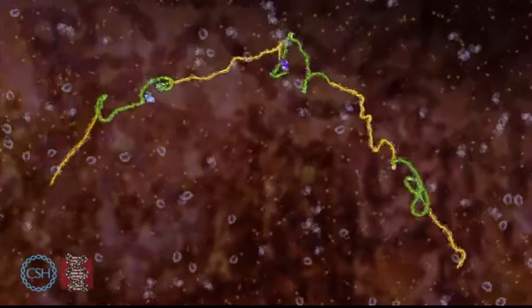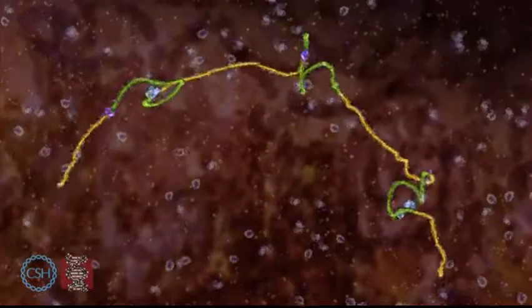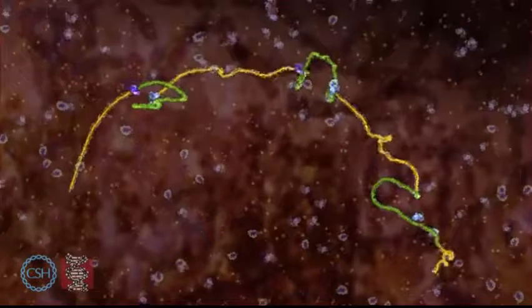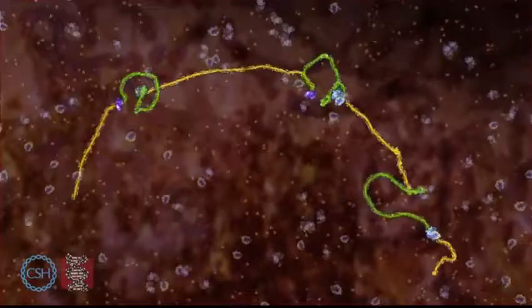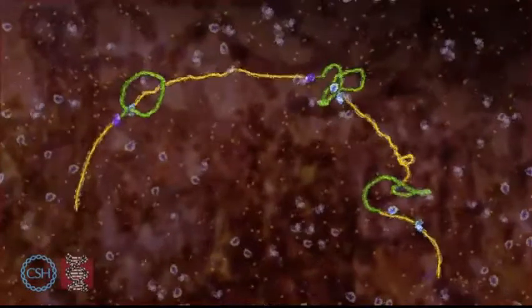Numerous spliceosomes, shown here in purple, assemble along the RNA. Each splicesome removes one intron, releasing the loop before disassembling.